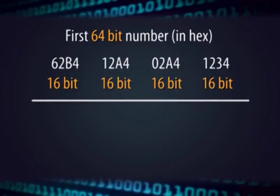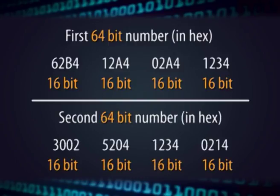So let us start with the problem description. It is required to add two 64-bit numbers. Let these 64-bit numbers be represented as 4 sets of 16-bit numbers. The first number has 16-bit parts: 62B4, 12A4, 02A4, and 1234. The second number has parts: 3002, 5204, 1234, and 0214H, represented in hexadecimal format.